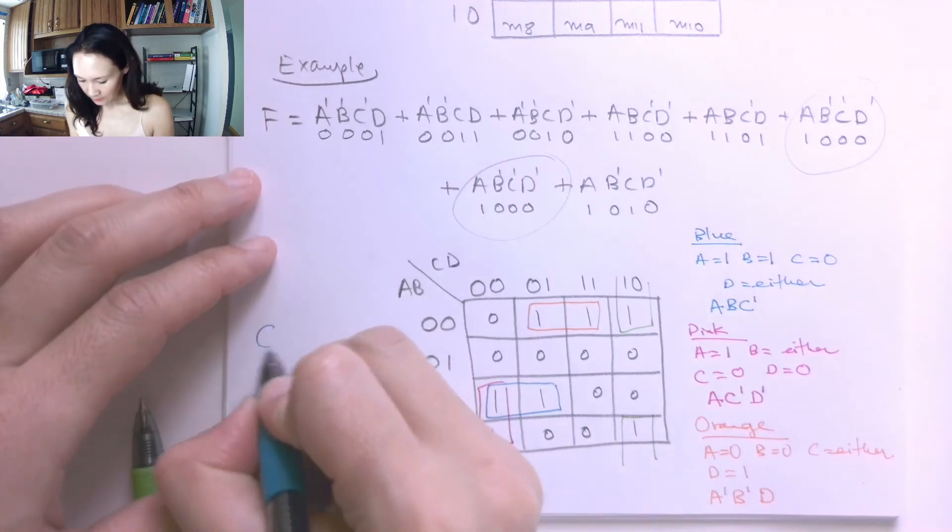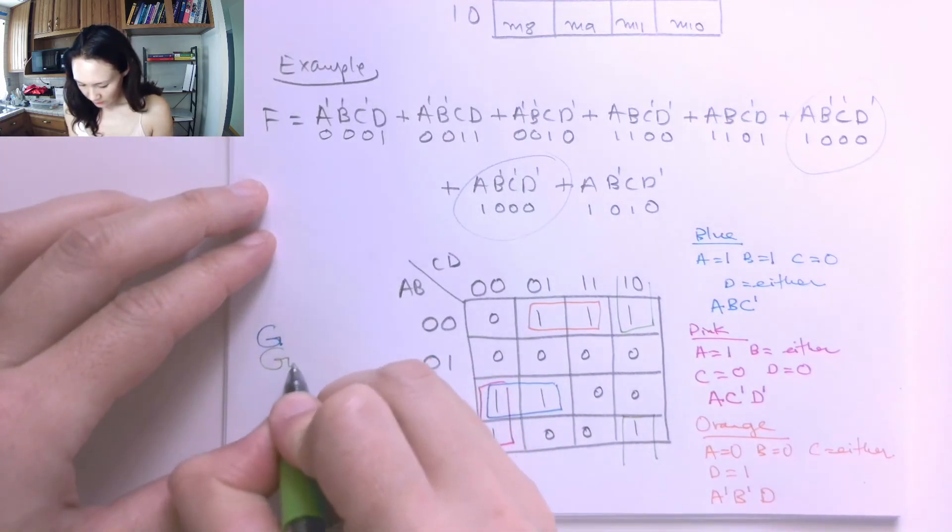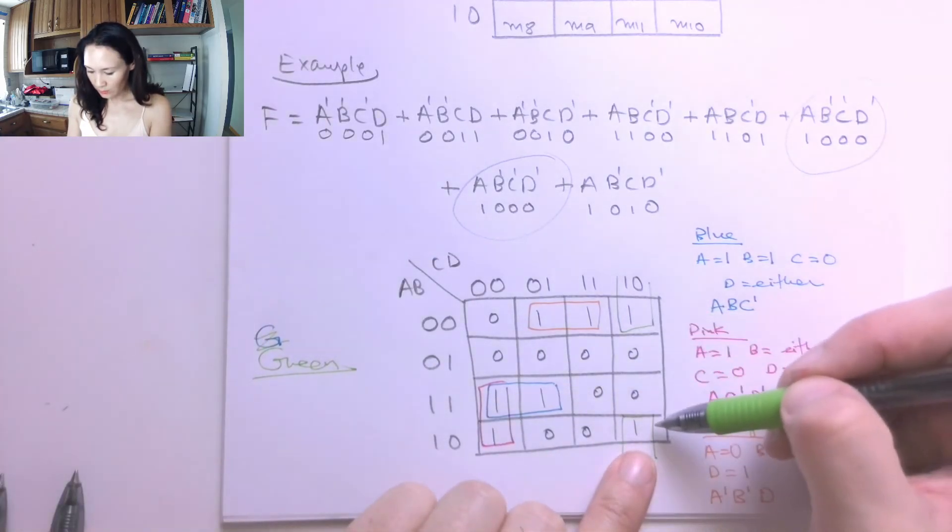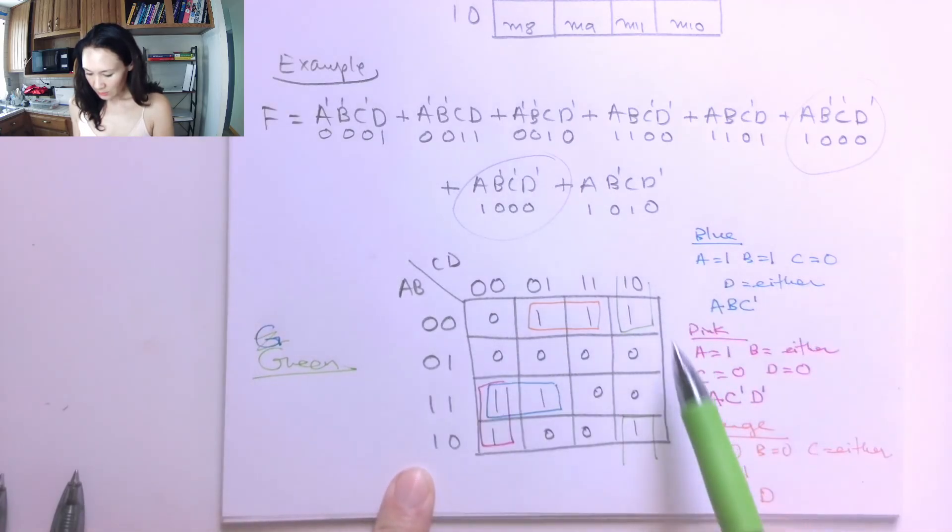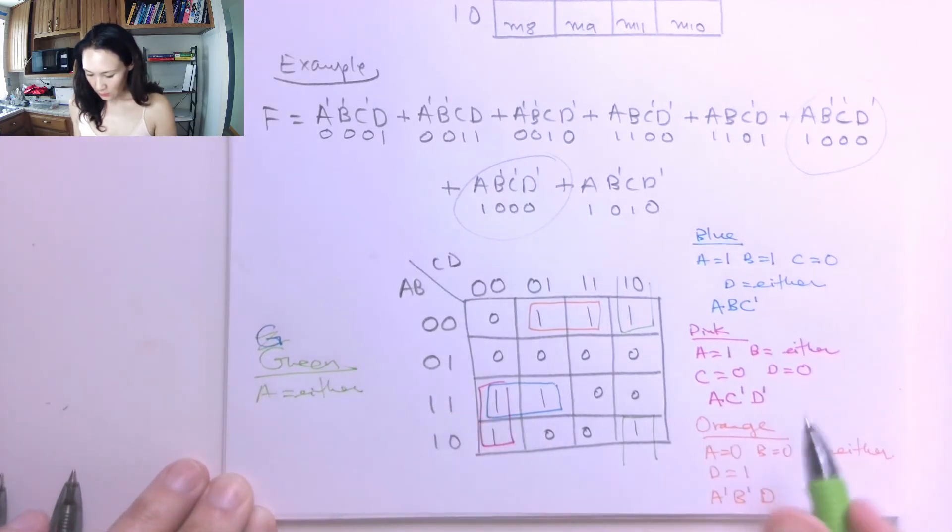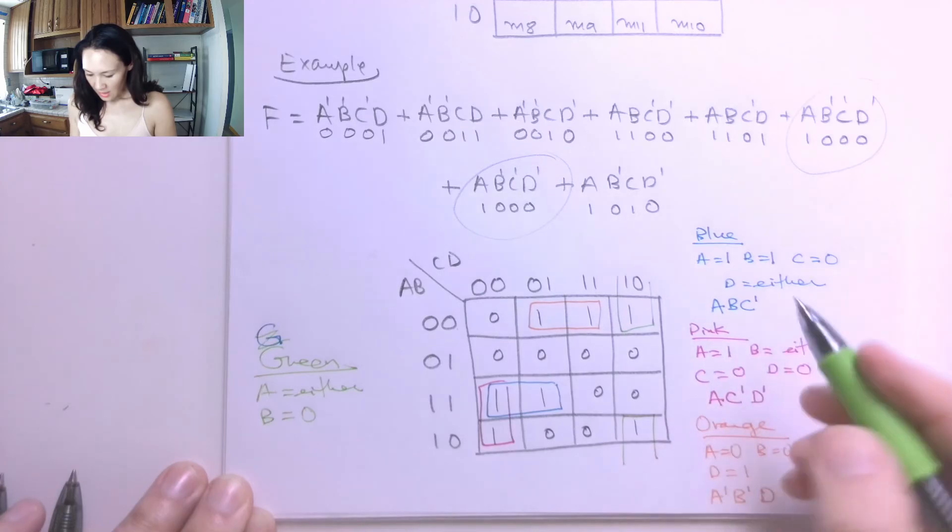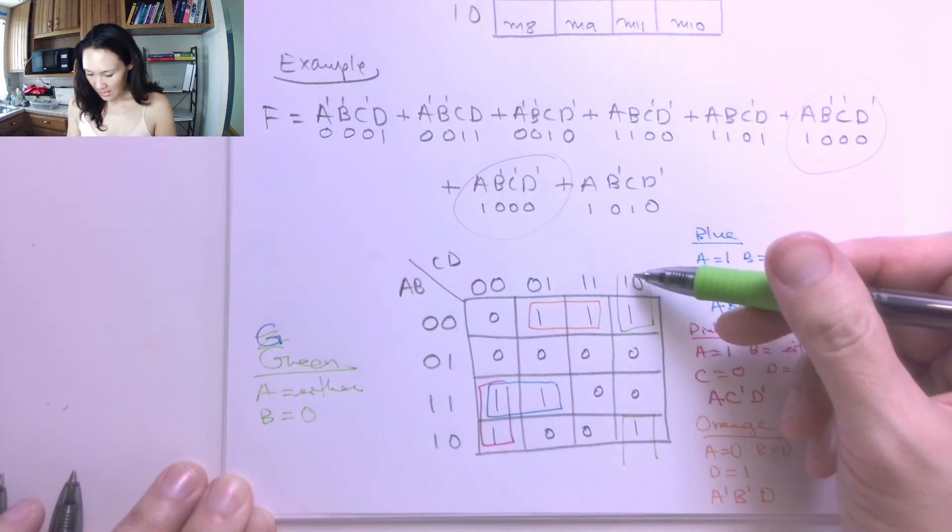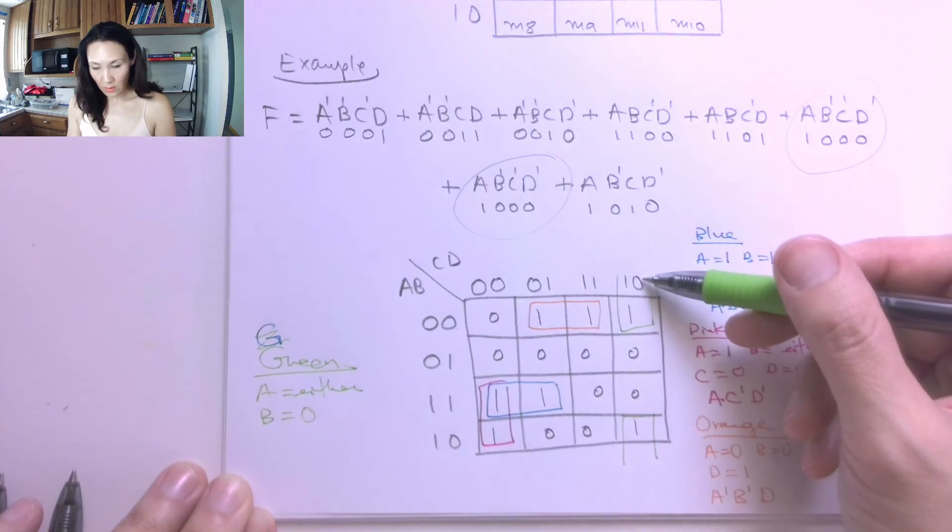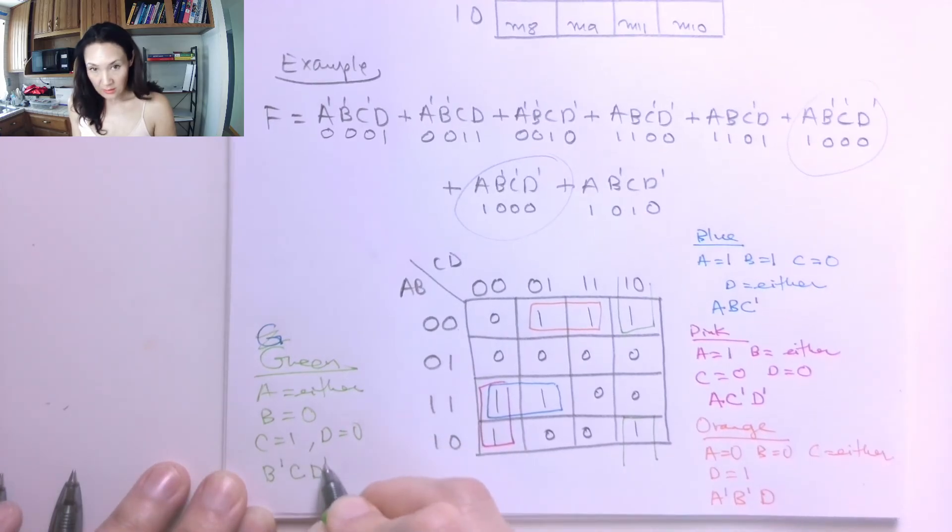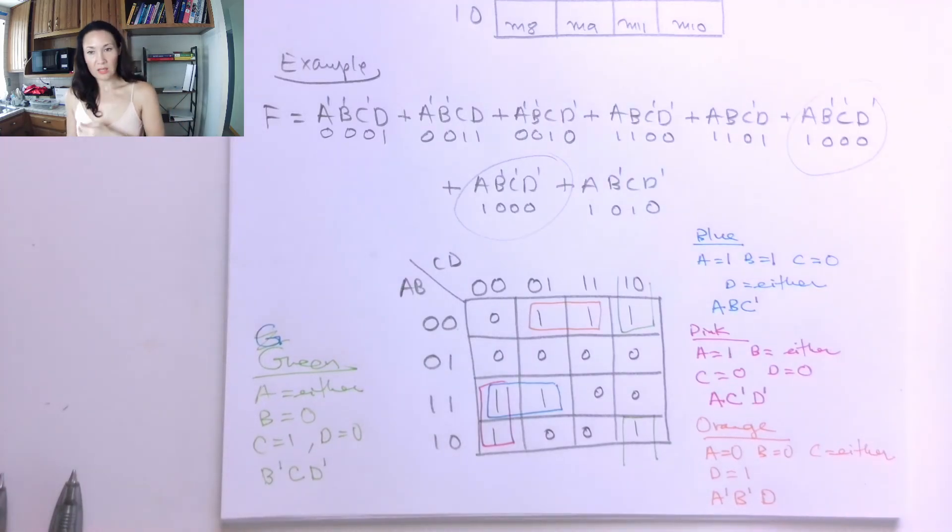Okay, and then finally, my green group. So for green, I have, what makes this green group true? Well, let's look at A. So between these two rows, I have A is 0, and A is 1. So that means A can really be either 0 or 1. B has to be 0. So it's 0 in both of those cases. And then, as for looking at the column, I have C is 1, and D is 0, to give me that column. C is 1, and D is 0. So my literals are B naught, C, D naught. And I don't have an A in there, because it can be either 0 or 1, so it doesn't matter.